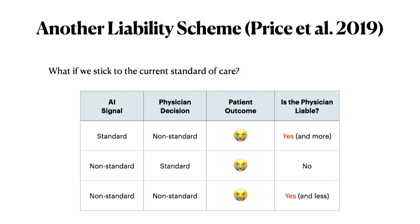The other legal school of thought holds that we should stick to the current standard of care and use AI only to reinforce it. Under this scheme, whenever the physician deviates from the standard of care, an AI signal alerting them triggers additional liability. If AI says standard and the physician does non-standard, the physician is not only liable but more liable. If AI says non-standard and the physician chooses standard, the physician is not liable. If both AI and physician choose non-standard, the physician is still liable, but possibly less so, using the AI signal as justification.